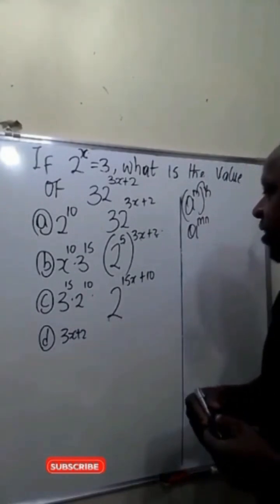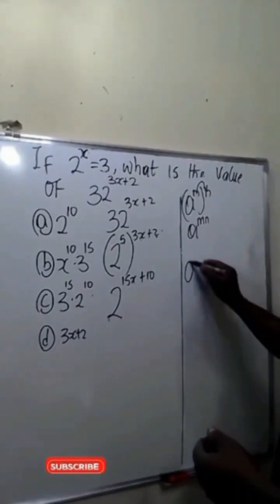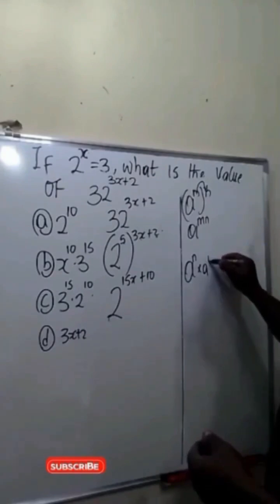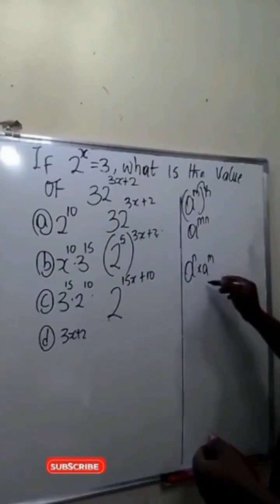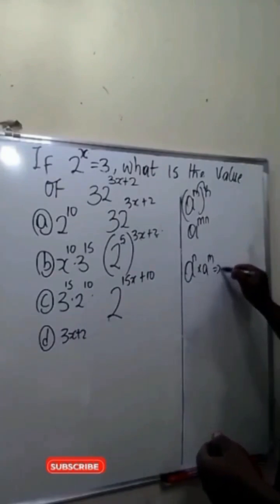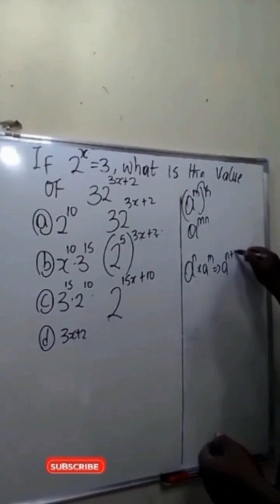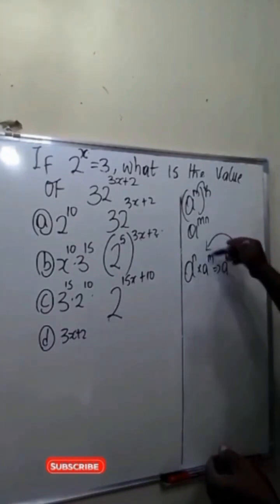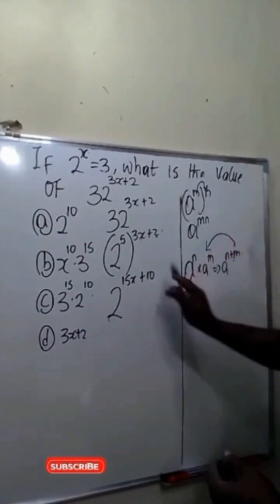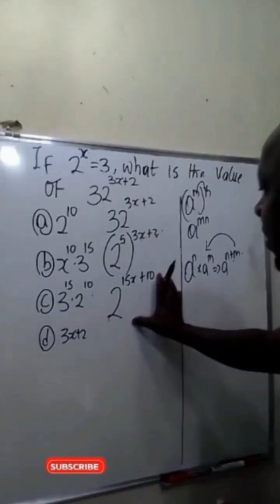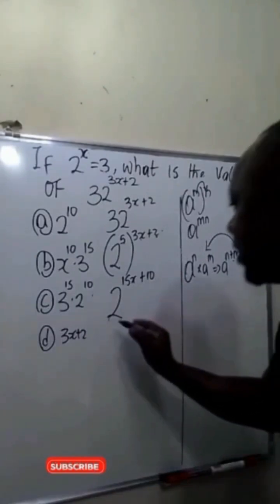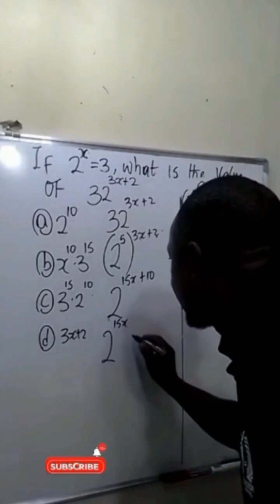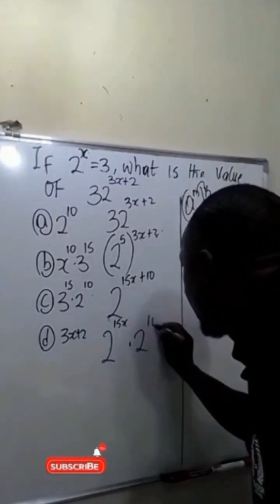The next thing we'll be doing is to apply another law of indices, which says if we have a raised to power n times a raised to power m, this is the same as a raised to power n plus m. Applying the same law, this can be written as 2 raised to power 15x dot 2 raised to power 10.